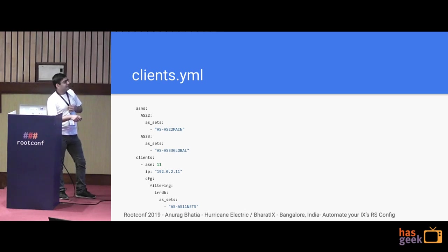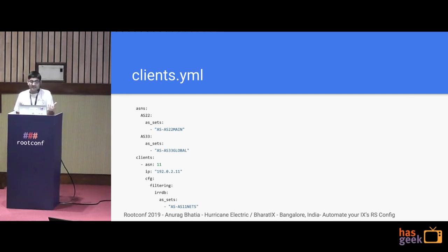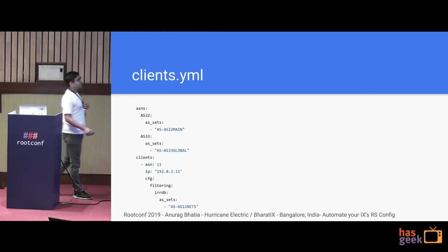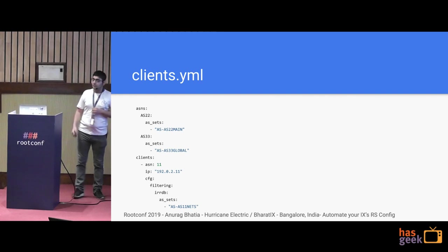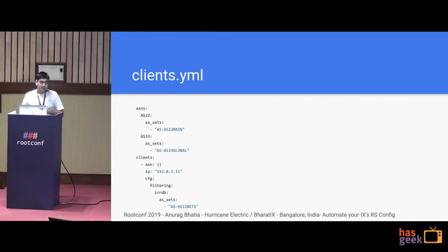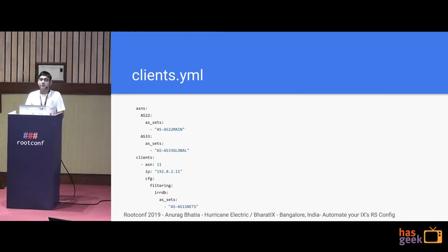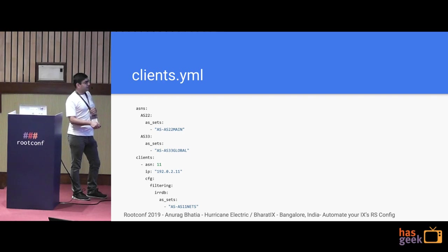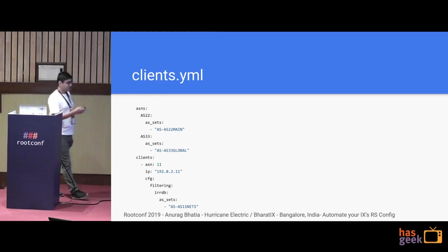For example, we've put AS22. You define the AS set, which is the set of ASNs behind it if you are aware of them. If a member ISP joining the exchange says their AS set is AS-myname, please allow all prefixes from that, we would put it here. As a practice, we try not to do this manually and instead make the package learn it from PeeringDB, because then it stays up to date. If you don't define an AS set, by default it will pull it from PeeringDB, which is a large database of all interconnection information worldwide. You also define the IP address, and it supports IPv6 of course.